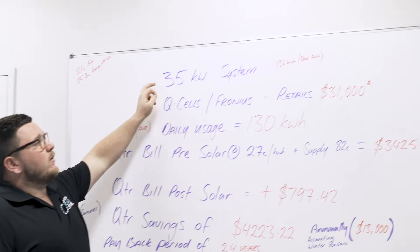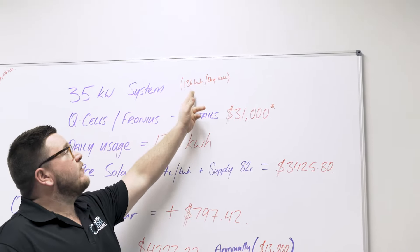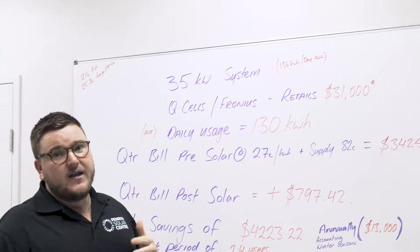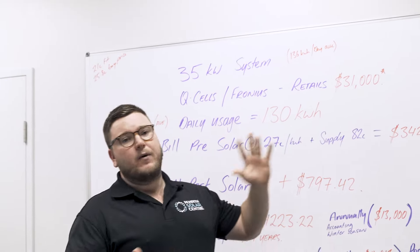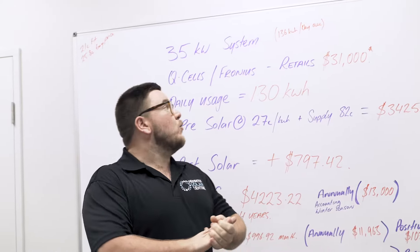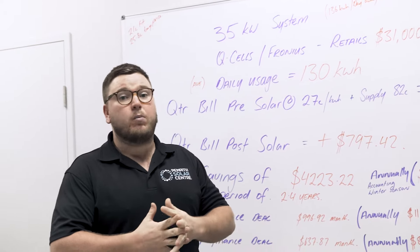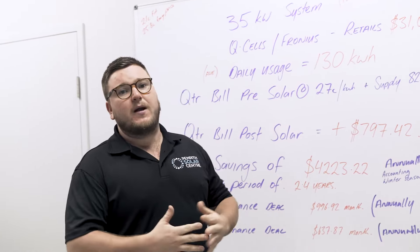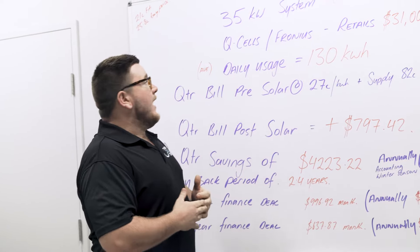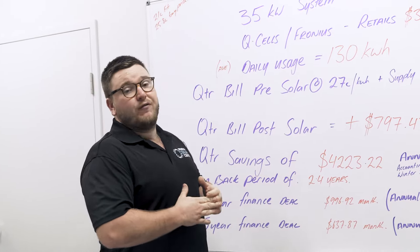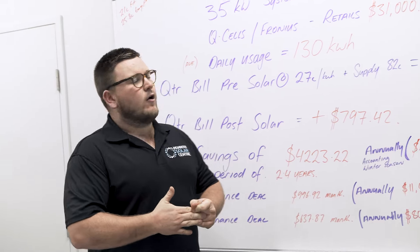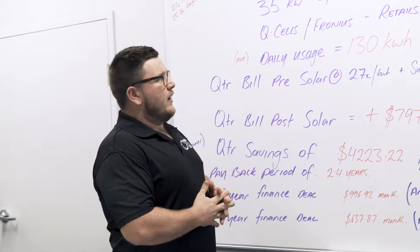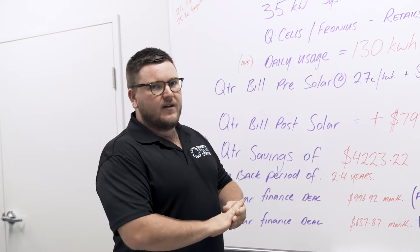So our 35 kilowatt solar system will produce around 136 kilowatt hours per day. Now that's an average figure. In summer we've seen it produce well up and over 220. In winter we're going to expect it to produce well below 100. So that's an average figure and that's due to the amount of peak sun hours that we have here in Western Sydney. Our average figure is calculated of 3.9 peak sun hours, and that's set by the BOM. We don't make that figure up, that is a fast and hard number.